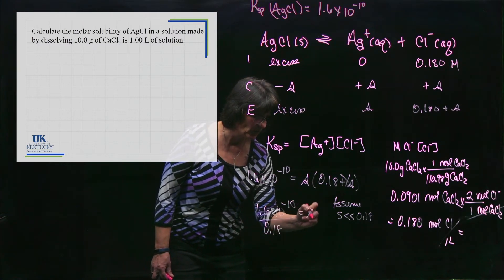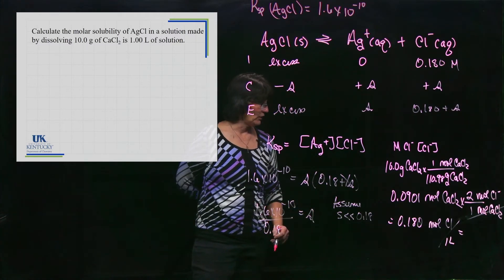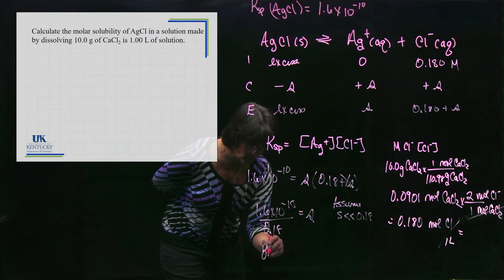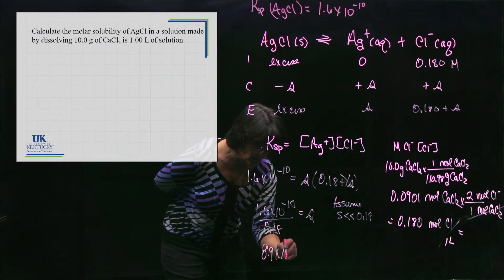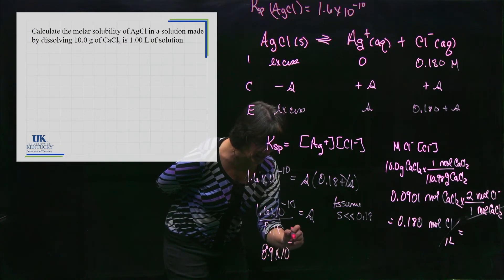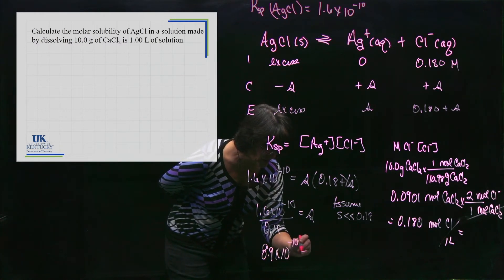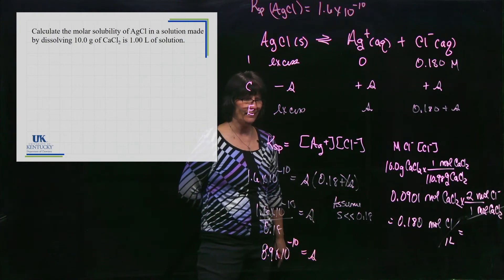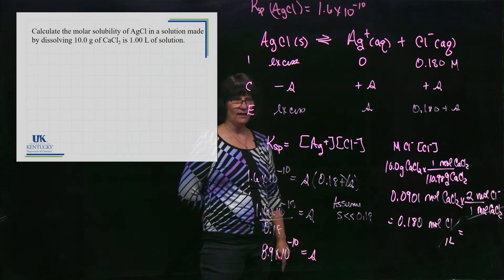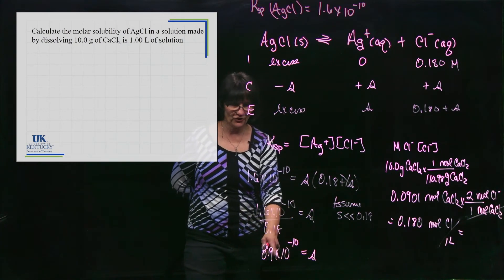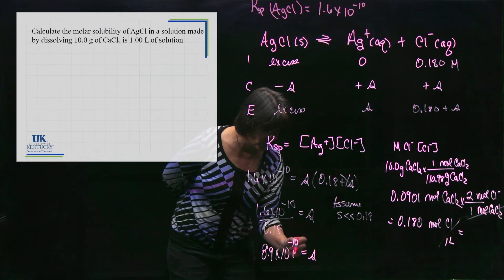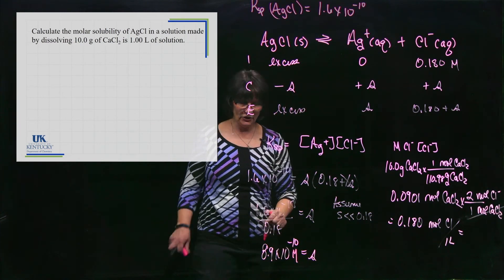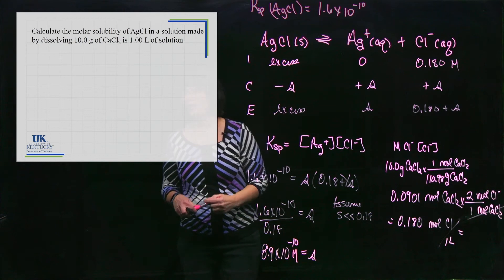Dividing 1.6×10⁻¹⁰ by 0.18 gives us the molar solubility s = 8.9×10⁻¹⁰. Checking the assumption: is 8.9×10⁻¹⁰ much much smaller than 0.18? Yes it is, so it's a good assumption. This is the concentration of silver chloride that will dissolve into the calcium chloride solution.